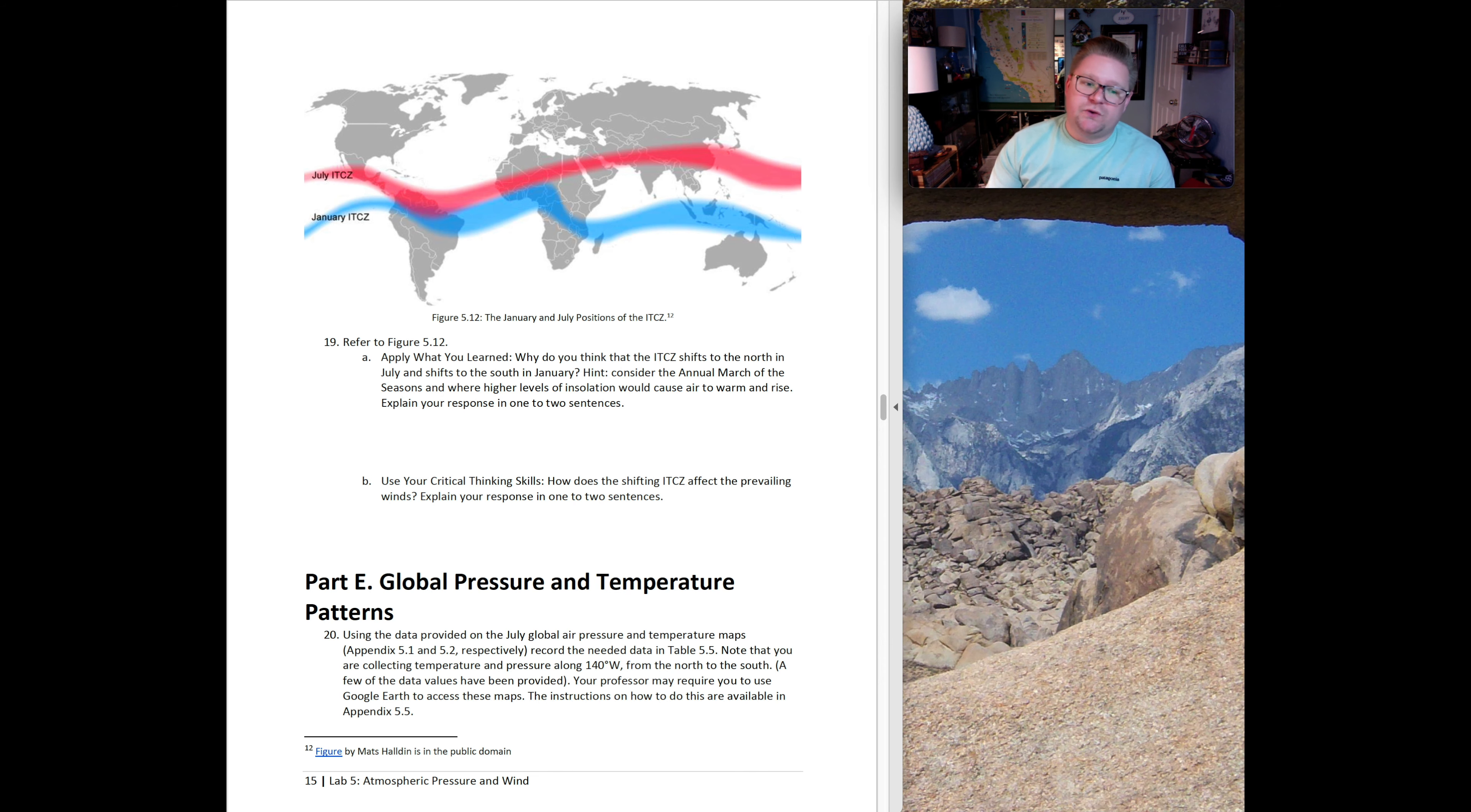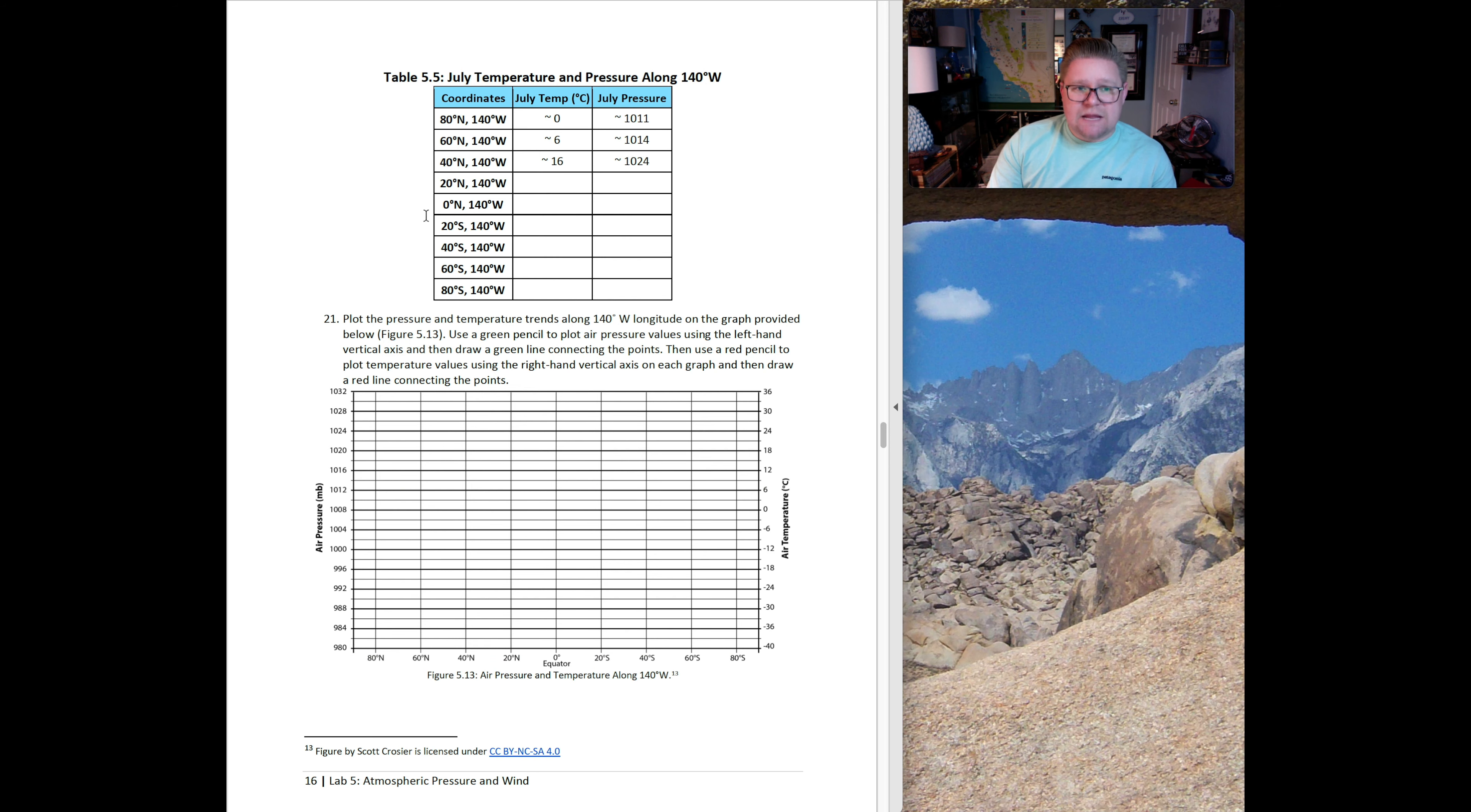Part E is global pressure and temperature patterns. This part has got a lot more graphing, similar to what we did earlier on in this lab. Question 20 says, using the data provided on the July global air pressure and temperature map, appendix 5.1 and 5.2 at the end of this lab, record the needed data in table 5.5.